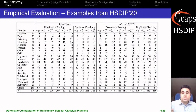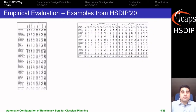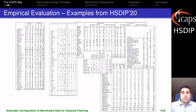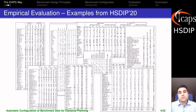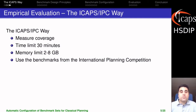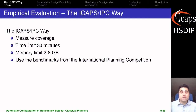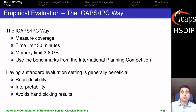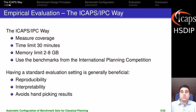I'm only using this as an example. I could have taken many other tables because only in HSDIP 2020, all these tables show results in similar ways. This is the ICAPS or IPC way, where we measure coverage under certain time and memory limits using the benchmarks from the international planning competition. Having this standard setup for evaluation has some advantages in terms of reproducibility and interpretability — it's much easier to understand the results of a paper when you're already familiar with the setup.